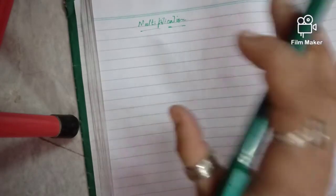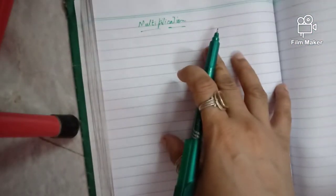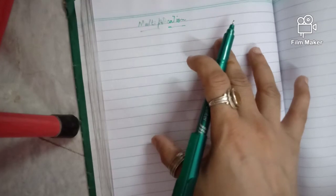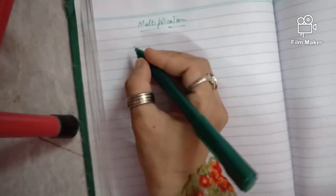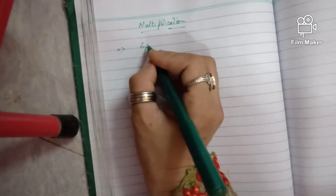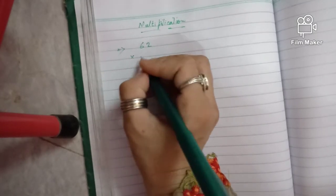Assalamualaikum viewers. In this video we will learn the fast multiplication method. For example, we take 62 multiply by 27.